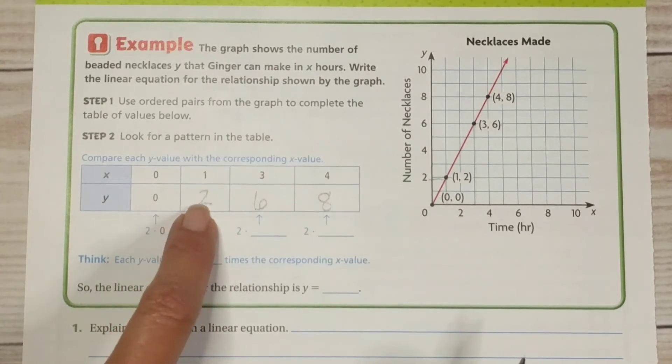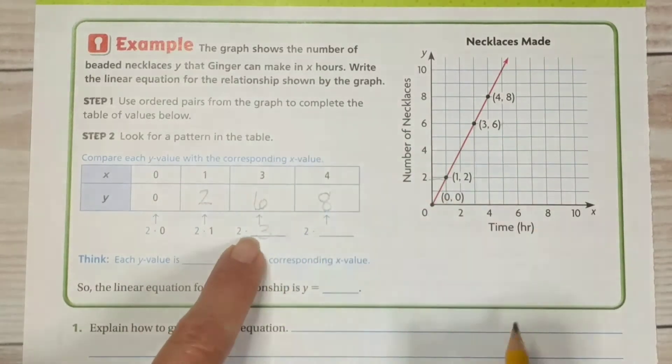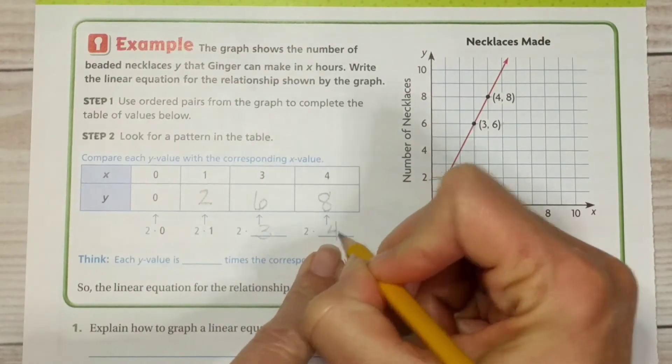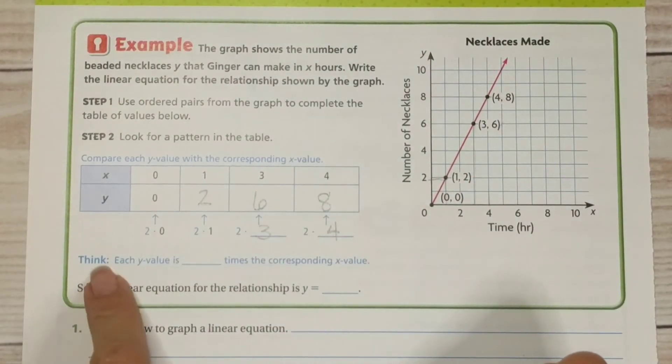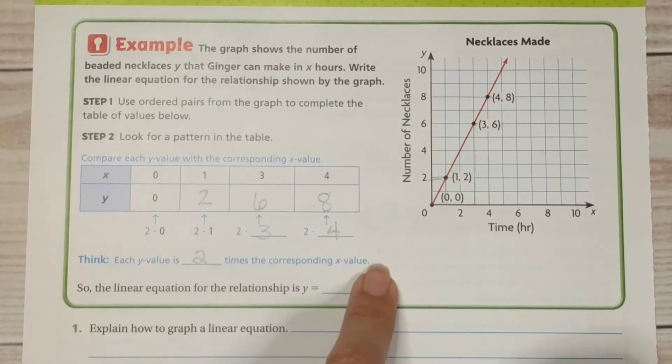So here we have 2 times 0 gives us 0. 2 times 1 gave us 2. 2 times 3 gave us 6. 2 times 4 gave us 8.